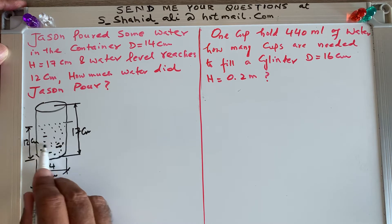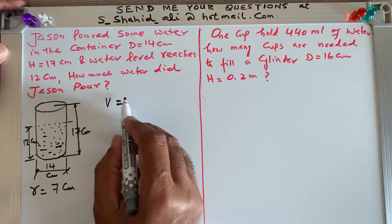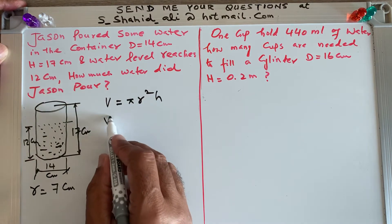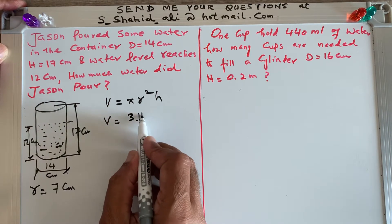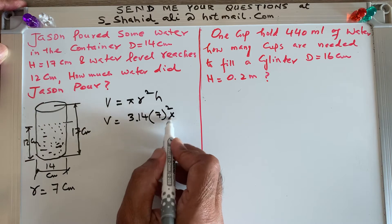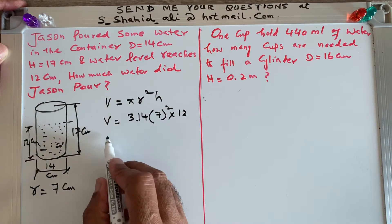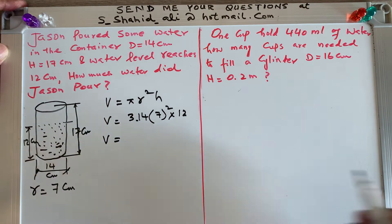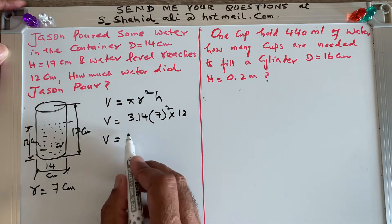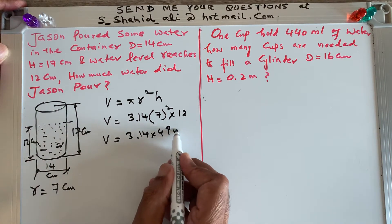The water level is 12 centimeters. The formula remains the same: volume of a cylinder equals π r² h. So volume equals 3.14 times r² which is 7², times h. We use h = 12, not 17, because Jason poured water and the water level reaches to 12 centimeters. So: 3.14 times 49 times 12.